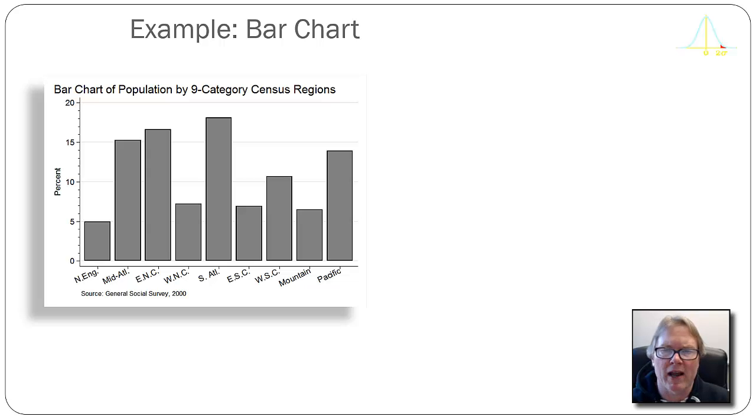So by default this is the graph that STATA produced for me. Maybe I like this graph organized differently. Because the data, this region variable, is non-orderable and discrete, I can put the bars in any order that I want.